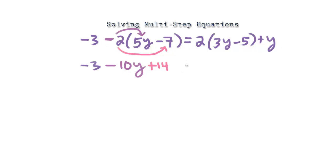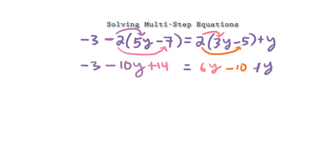Let's bring down the equal sign. On the right-hand side, I'm going to distribute this 2 into 3y and negative 5. So 2 times 3y gives us 6y, and 2 times negative 5 gives us negative 10. And we have this y that's hanging around, so let's bring it down. There are no more parentheses.